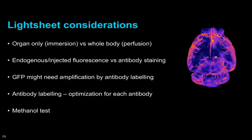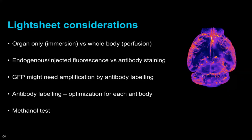If you want to use antibody labeling, there are a number of protocols out there. It is good to check published papers to see if someone has used antibodies against the epitope that you are interested in, as antibody labeling requires optimization for each antibody and some antibodies may not actually work. You can do a methanol test to see whether the antibody still works—and if not, you can try another antibody. This applies if you use methanol in your clearing protocol.